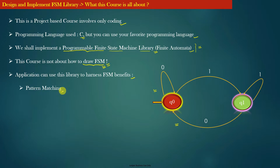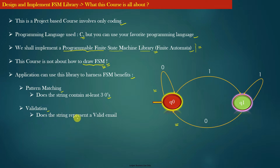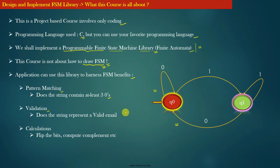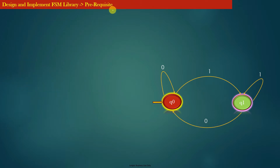The application can use this library to harness FSM benefits. Finite state machines can be used for pattern matching — for example, does the input string have at least three zeros? They can be used for validation — for example, does the input string represent a valid email ID? And finite state machines can also be used to perform calculations — for example, flipping the bits of an input string or computing the complement of a given number. Once we develop this finite state machine library, the application can use it to perform any of these three functions.